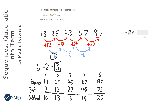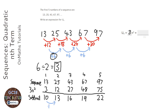We end up with a little sequence: 10, 13, 16, 19, 22. We find the difference in that: plus 3, plus 3, plus 3, plus 3.